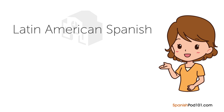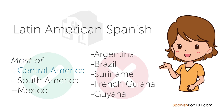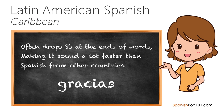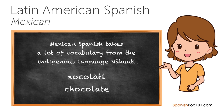There's no standard Spanish dialect — only regional dialects — so it's common for Spanish learners to encounter different kinds of Spanish, especially in terms of pronunciation. In the US, Latin American Spanish is what's most commonly taught in schools. It's spoken in most of Central America and South America, including Mexico, and excluding Argentina, Brazil, Suriname, French Guiana, and Guyana. Latin American Spanish has strong Rs and relatively clean pronunciation — words are pronounced mostly as they are written.